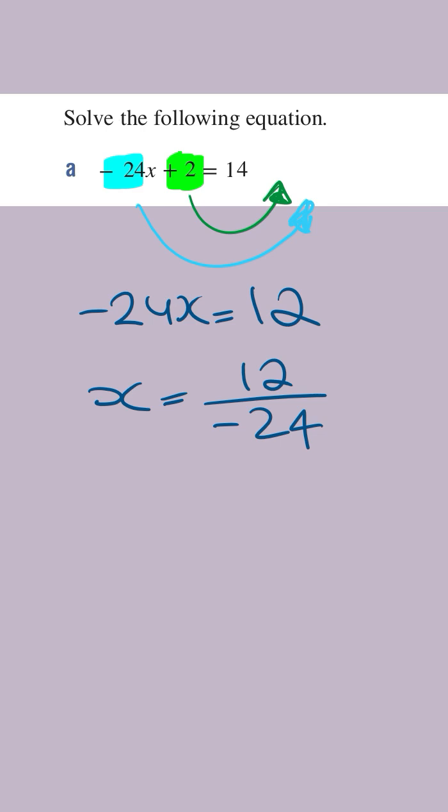Now whenever you see a fraction, you want to see if you can simplify it. We can simplify this: 12 goes into itself once, into 24 twice, and so simplifying this, x is equal to minus 1 over 2.